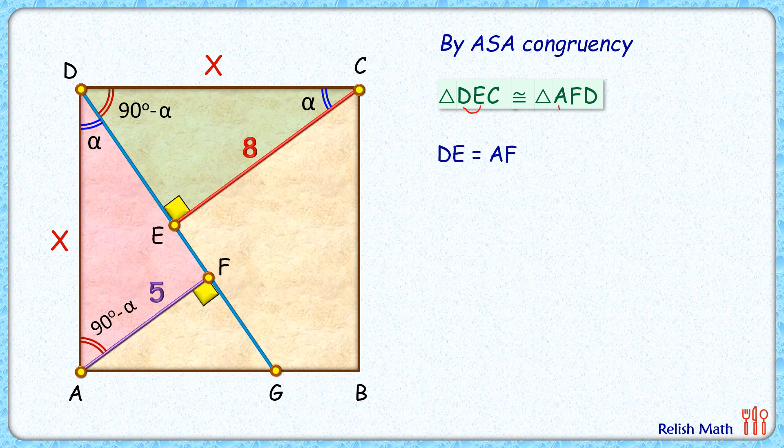Or we can say that DE length will be equal to AF length. But AF length is 5 centimeters, so DE length is 5 centimeters, or this length here is 5 centimeters.